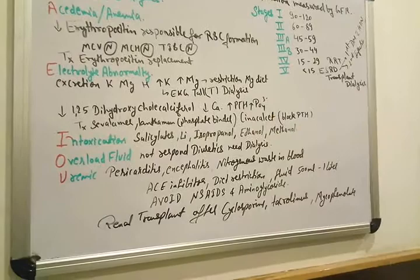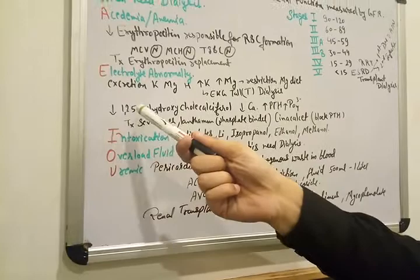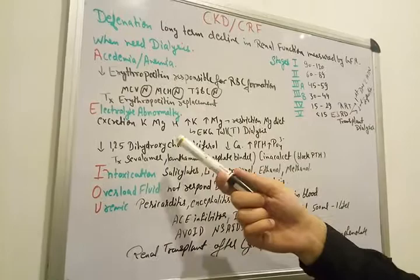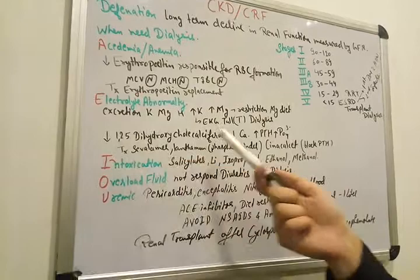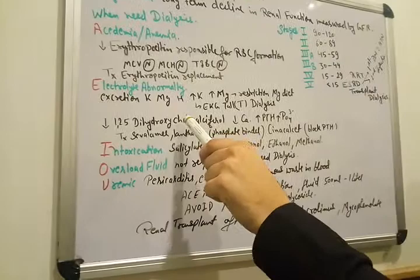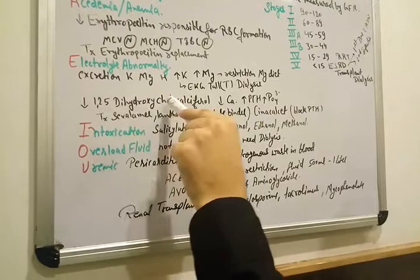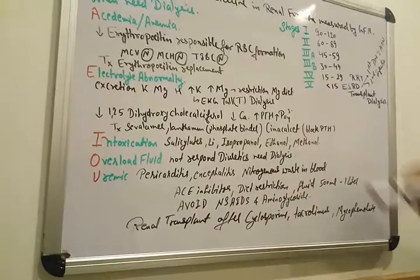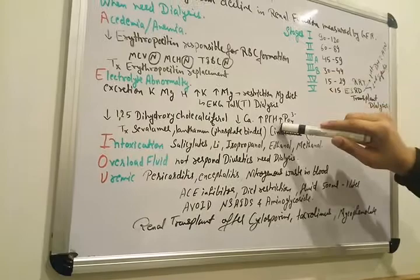And what other electrolyte abnormality? There is decrease in 1,25 dihydroxycholecalciferol or we can say calcitriol. This is the active form of vitamin D. Kidney is responsible for synthesis of 1,25 dihydroxycholecalciferol. If there is decrease in active vitamin D, there is also decrease in calcium because this is helpful in absorption of calcium. When calcium decreases in our body, then parathyroid hormone increases which is responsible for phosphatase increases.